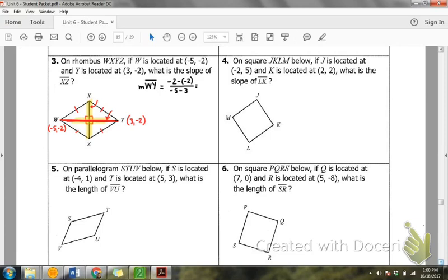Negative 2 minus negative 2 is what? 0 over negative 8. What's 0 divided by anything? So this slope is 0. Nope. A slope of 0 is still a slope, right? It's just a flat slope. You don't have any incline. Okay? So 0 can still be a slope.